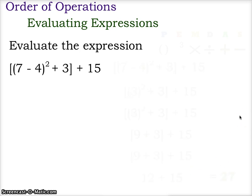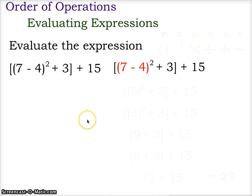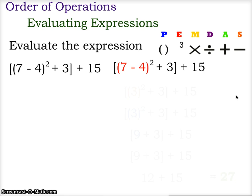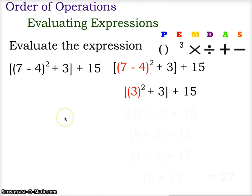Here we have an expression using an exponent and grouping symbols: the quantity 7 minus 4, squared, plus 3 in brackets, plus 15. We start with the innermost grouping symbols — the parentheses — and do 7 minus 4, which gives us 3. Now we have 3 squared, plus 3 in brackets, plus 15.